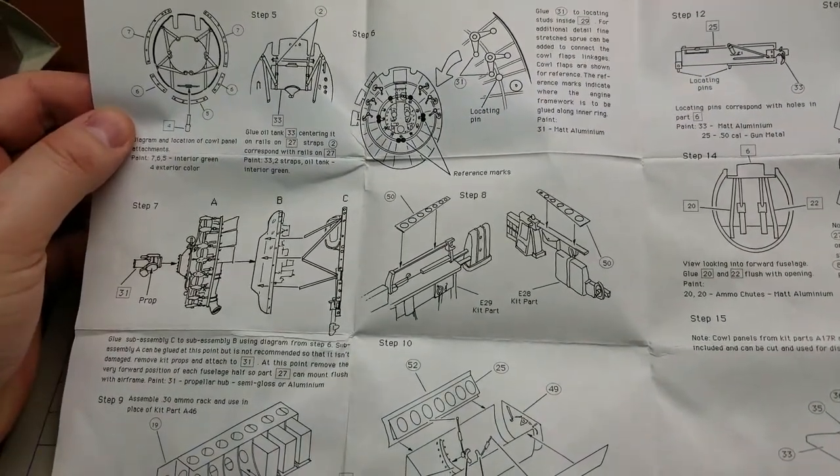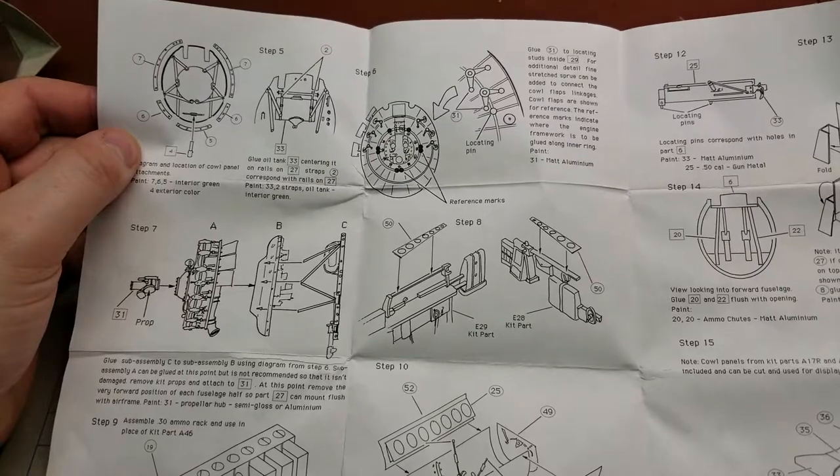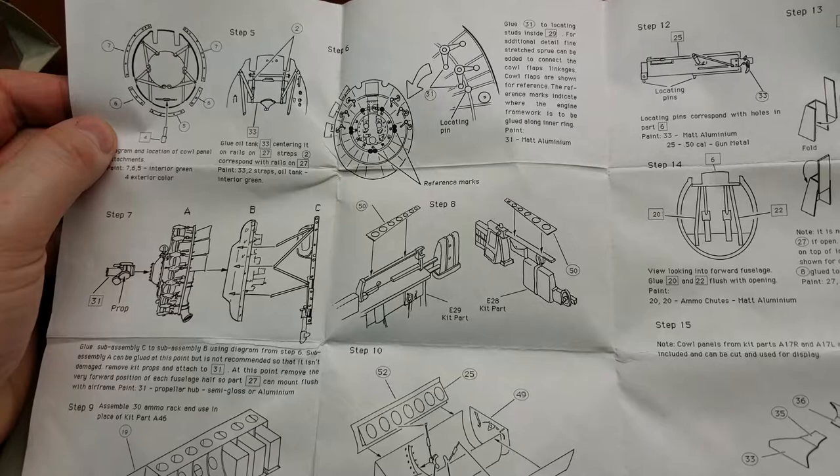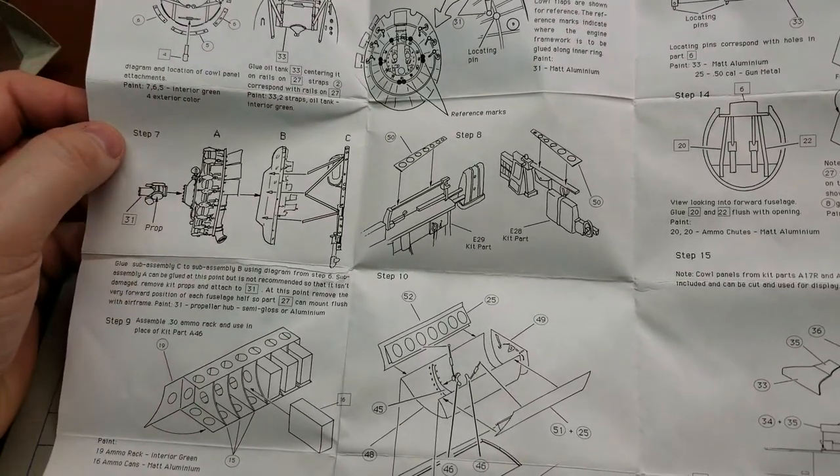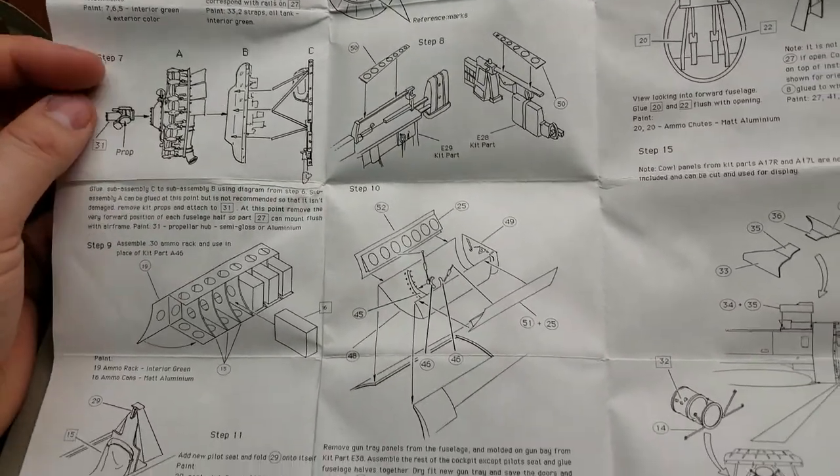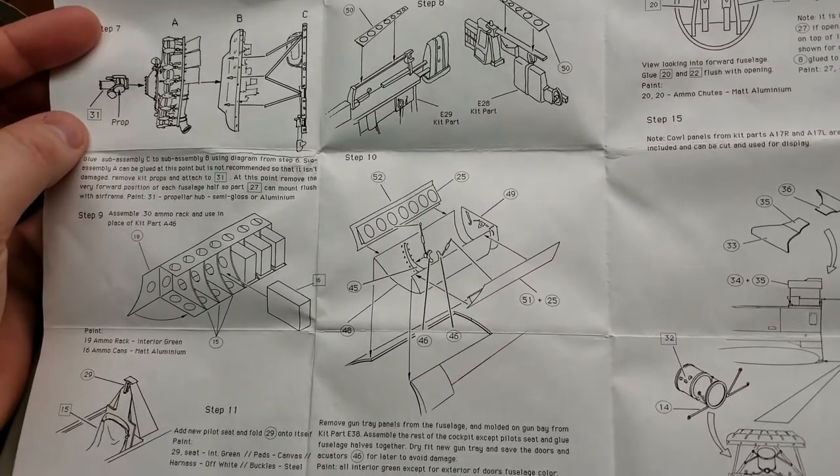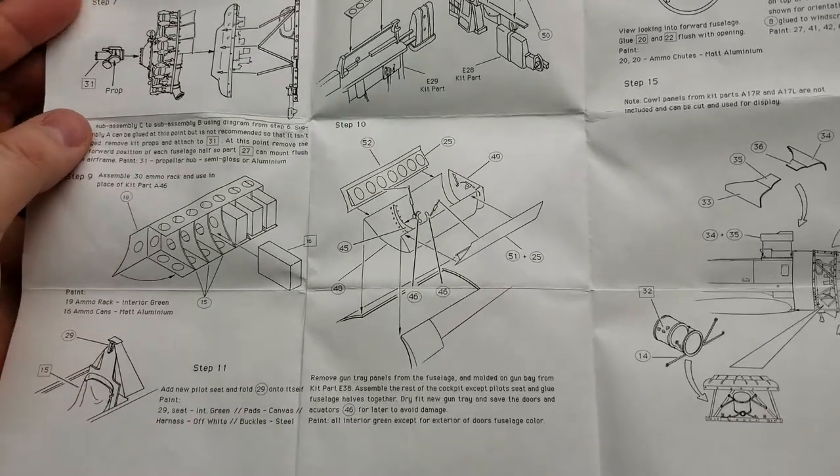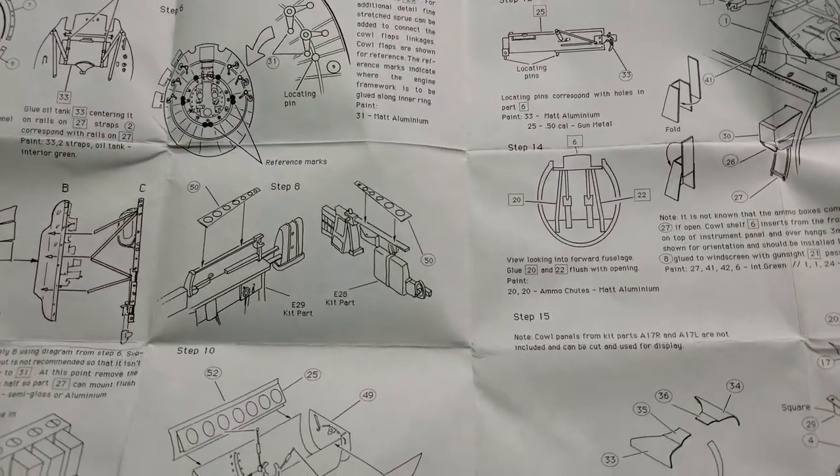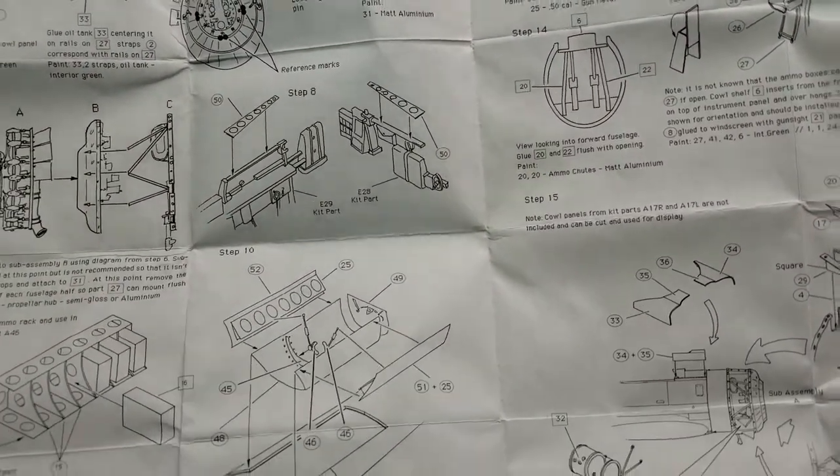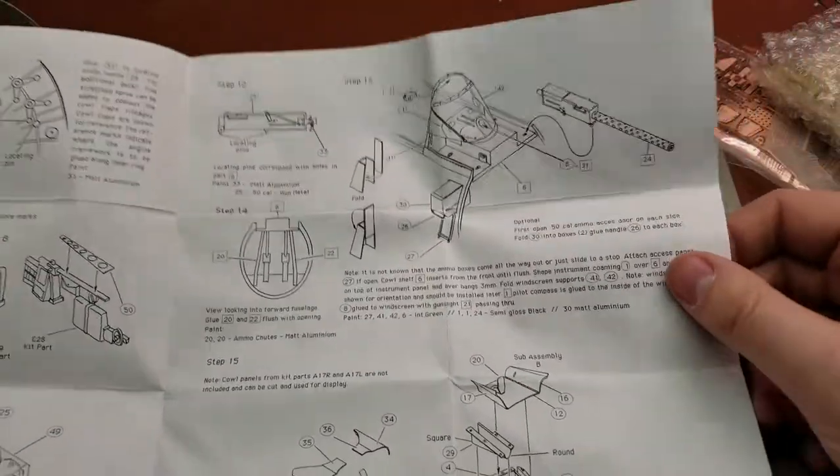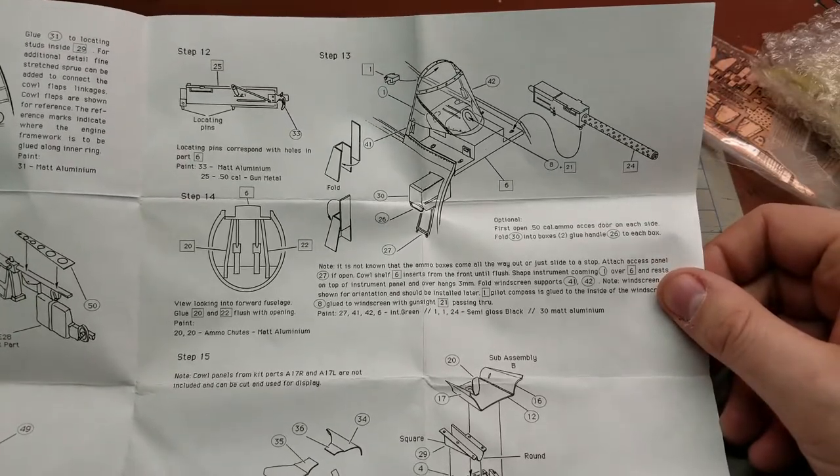Continuing detail of the engine, including the actual cowling. Then we have the ammo cans and ammo rack, details inside the cockpit. Pause at any point if you need to or want to. Actual machine gun.